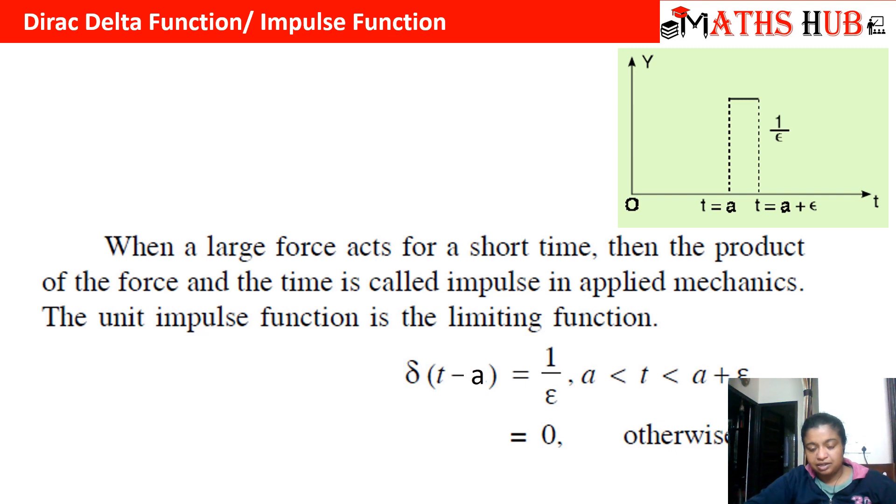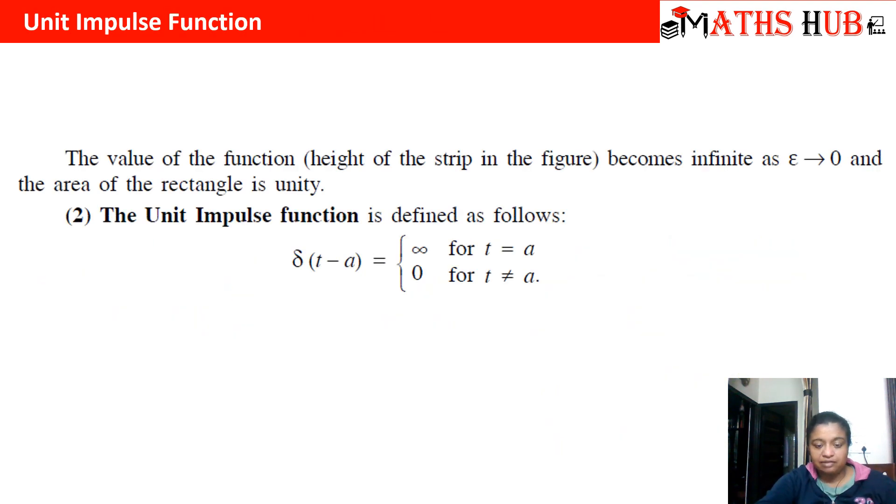Then this will approach to infinity, and a and a plus epsilon will almost become a single point—they will approach to a single point. This is when we define it as a unit impulse function.